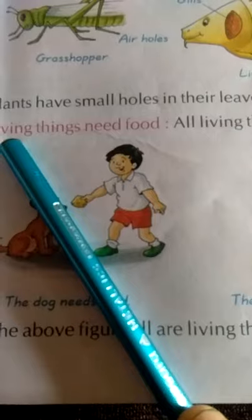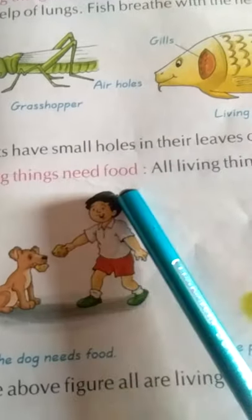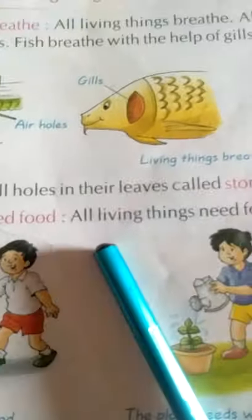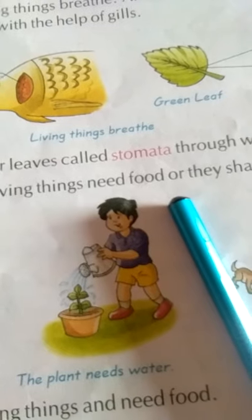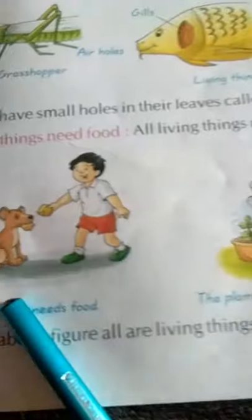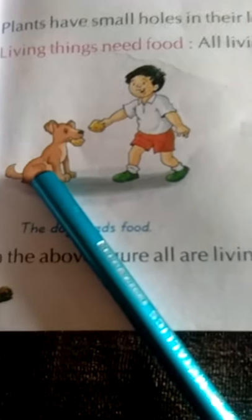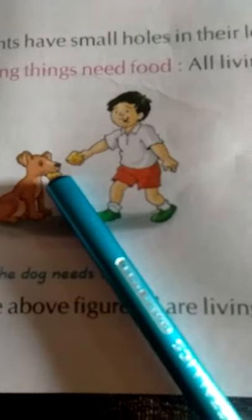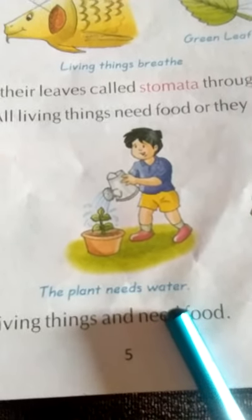Second characteristic: living things need food — सजीव वस्तुओं को भोजन की जरूरत होती है। All living things need food or they shall die — सभी सजीव वस्तुओं को भोजन की आवश्यकता होती है, यदि नहीं मिलेगा तो वे मर जाएंगे। The dog needs food — अगर हम dog को भोजन नहीं देंगे तो भूख के कारण मर जाएगा। Plants को भी पानी चाहिए — समय पर पानी न मिले तो plants भी मर जाएंगे।